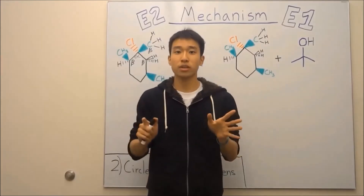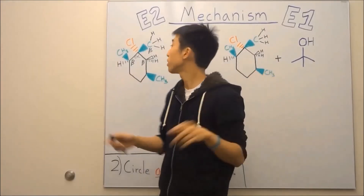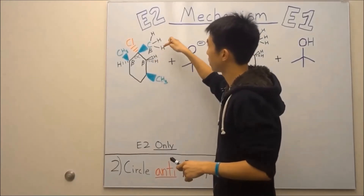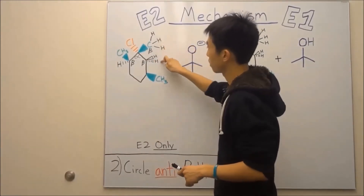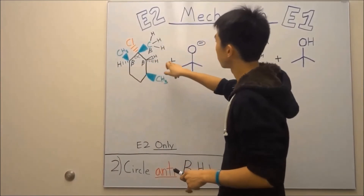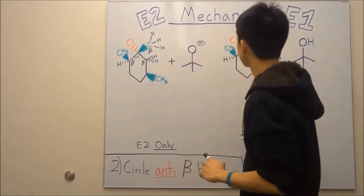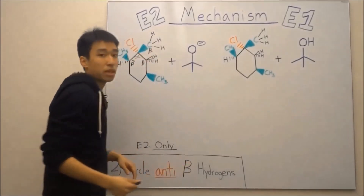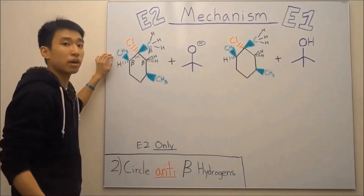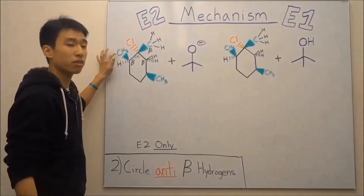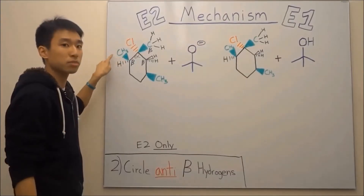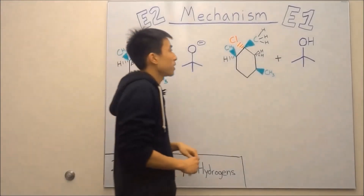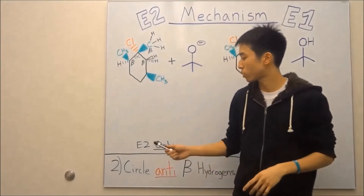This is what you guys should have gotten. Your beta hydrogens should have been here, here, here, here, here, and here — so a total of six beta hydrogens on both substrates. The most common mistake people tend to make is drawing out the hydrogens on this carbon over here, because it kind of looks like it's a beta carbon, but it's actually not.